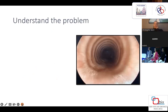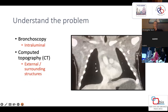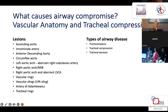You have to understand the problem. Bronchoscopy provides an intraluminal assessment, which is of utmost importance. CT scan provides the external or surrounding structures that are affecting the airway. What causes airway compromise?